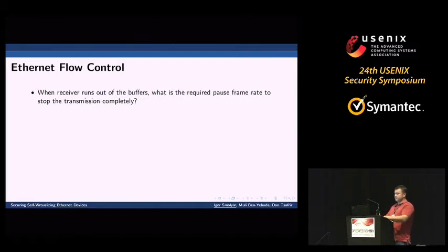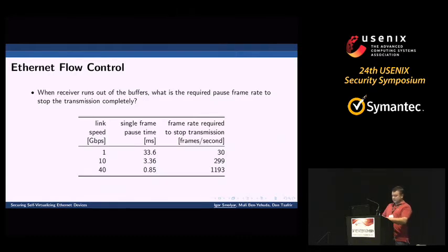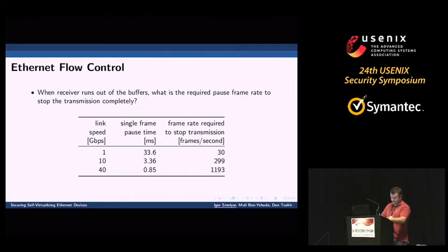Let's assume the receiver completely runs out of buffers and wants to tell the sender to completely stop transmissions. How fast should the receiver send pause frame requests to stop transmissions completely? The answer depends on the link speed. For example, looking at the table, the second row describes a 10 gigabit link: a single pause frame on a 10 gigabit link will stop transmission for 3.36 milliseconds. So it is easy to calculate that 299 pause frames per second are required to completely stop transmissions.